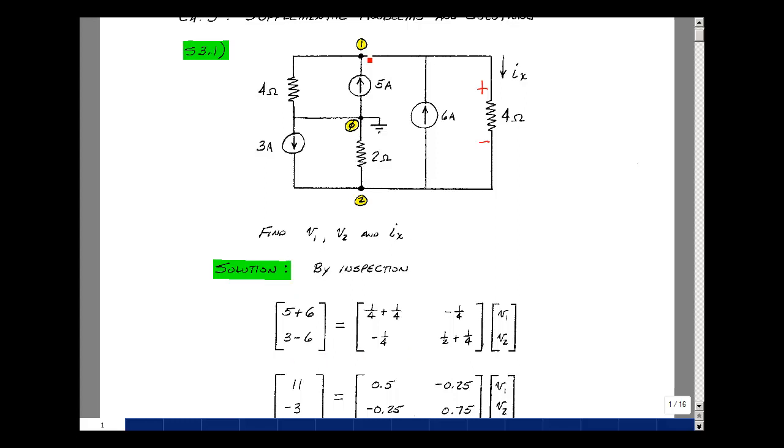So let's take a look at node 1. We're going to sum the conductances at node 1 and put that in row 1, column 1. So it'd be 1 quarter plus 1 quarter, and that's right here. And then between nodes 1 and 2, we have a 4 ohm resistor. So we're going to add up all of the conductances and then negate the sums.